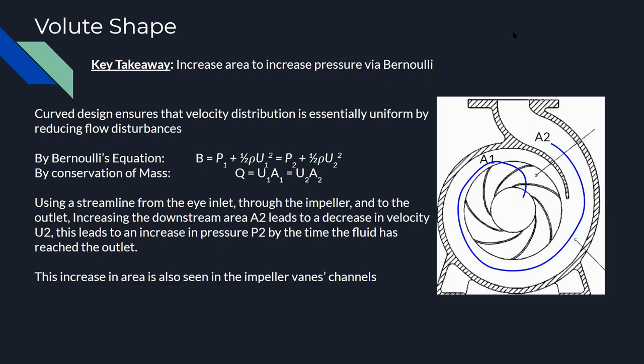As you can see from this diagram, the cross-sectional area of the volute casing increases. For this analysis, we will consider a streamline from the eye of the impeller to the exit of the pump, as shown in blue. By conservation of mass for an incompressible fluid, the velocity of the fluid decreases along a streamline, and by Bernoulli's principle, the fluid pressure rises.